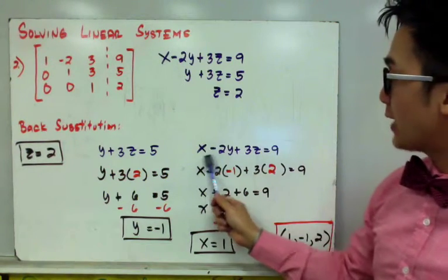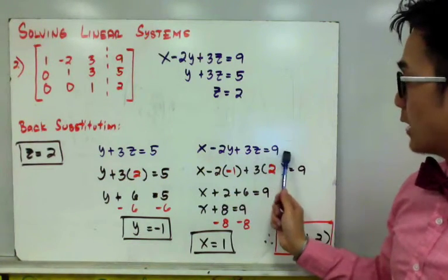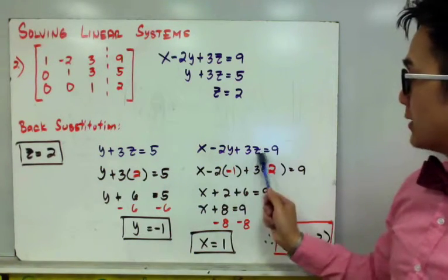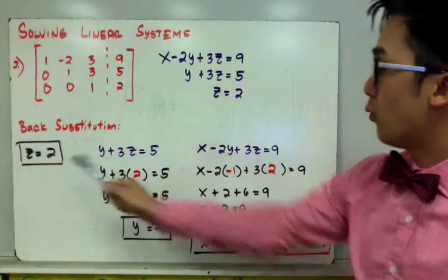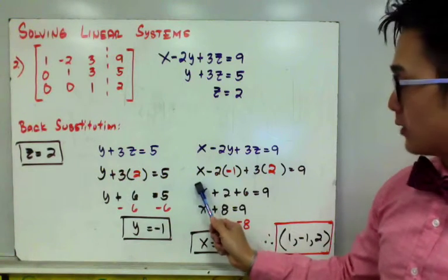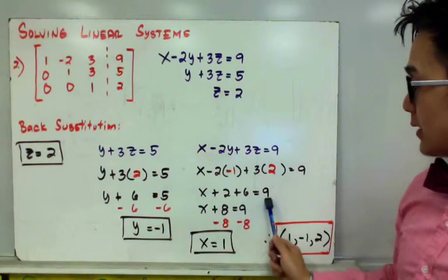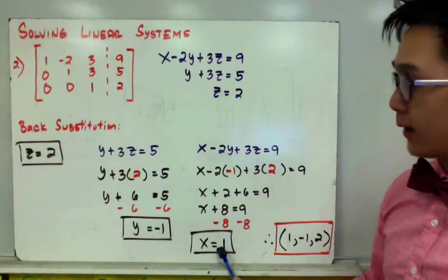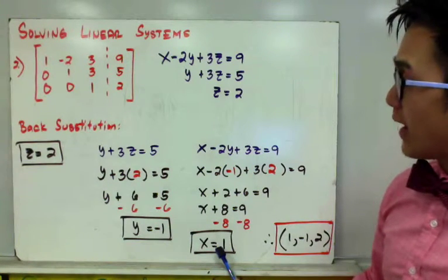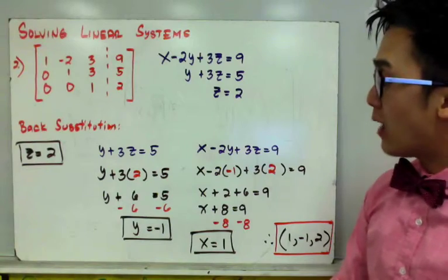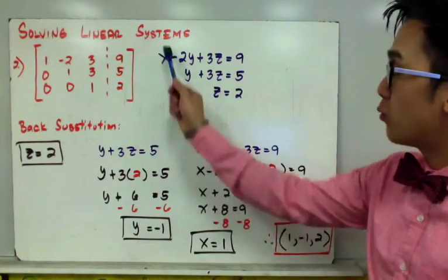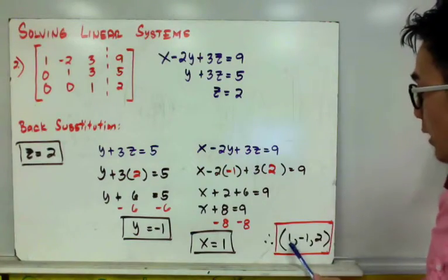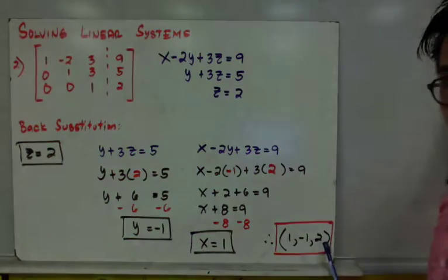We find x by substituting y equals negative 1 and z equals positive 2 into equation one: x minus 2y plus 3z is equal to 9. This gives us x plus 2 plus 6 is equal to 9, therefore x is equal to 1. The solution for our three-variable linear system is x equals 1, y equals negative 1, z equals positive 2.